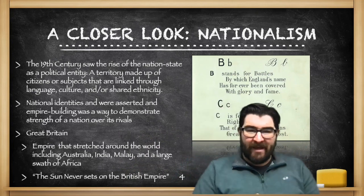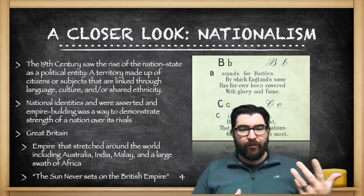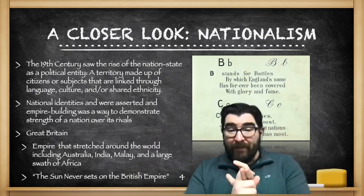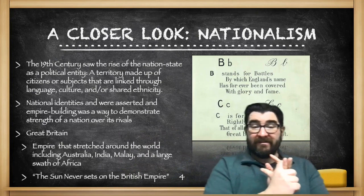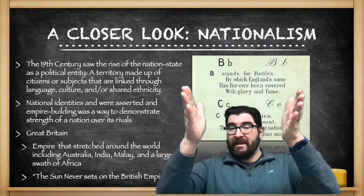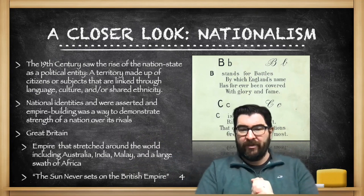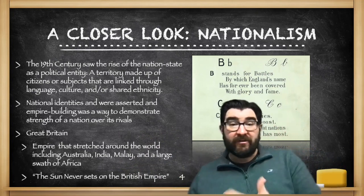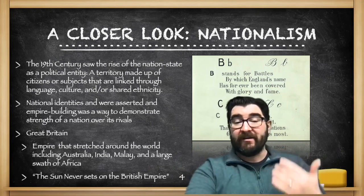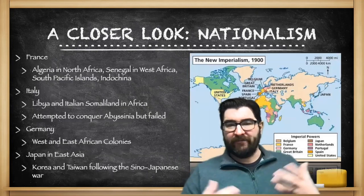Great Britain is a great example of this. Their empire stretched around the world, including Australia, India, the Malay Peninsula in Southeast Asia, and a large swath of Africa going from Egypt in the north to South Africa in the south. It was said by the British that the sun never sets on the British Empire, and this was a point of nationalist pride for their nation.